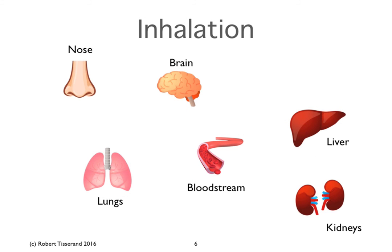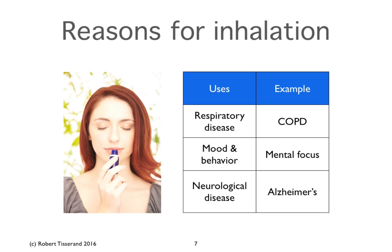When we inhale an essential oil, most of it passes into the respiratory system. The 95% shown isn't precise — that's an approximation — but some is also absorbed into the brain, and the nose-to-brain route is going to be the subject of the next lesson. From the lungs and the brain, the essential oil constituents then take the same route out of the body. Reasons for inhalation include respiratory disease of all kinds, mood and behavior issues, and neurological disease because of the nose-to-brain route.